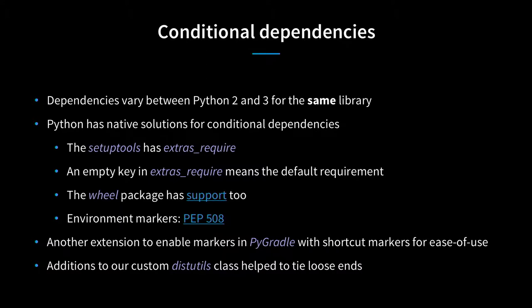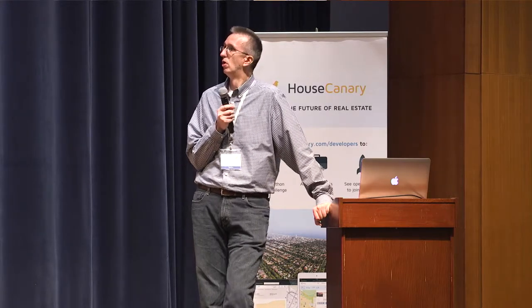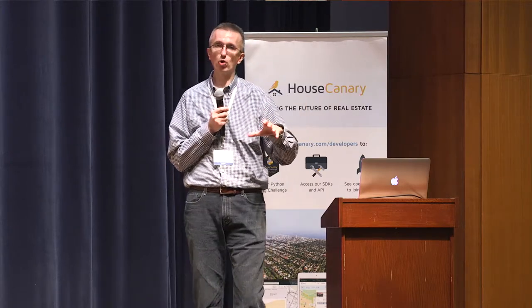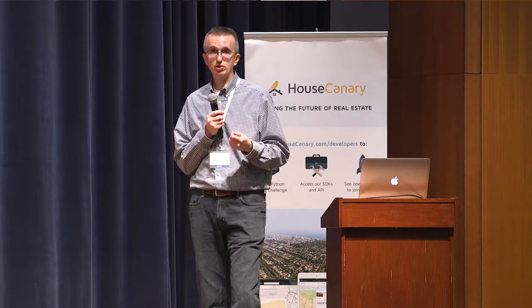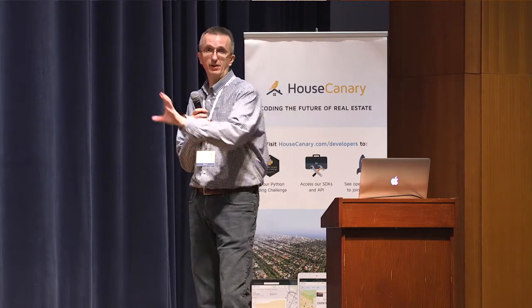Conditional dependencies was another extension we added. Some packages are backports and are not needed on Python 3. So you really have conditional dependencies depending on the Python version you use. There's a PEP for that—PEP 508, environment markers. That PEP is supported with recent versions of setuptools (higher than 18) and also wheels higher than 0.24 support environment markers. We also provided a custom Python distutils class that every one of our products has in setup.py via the `distclass` option, acting as a bridge between Gradle and Python.